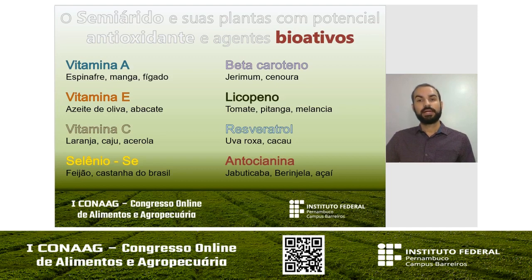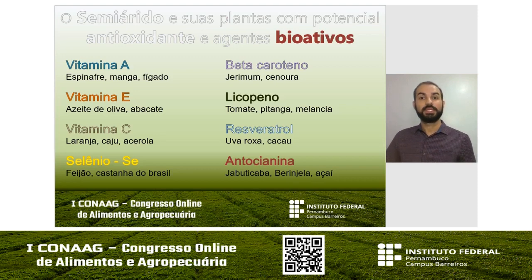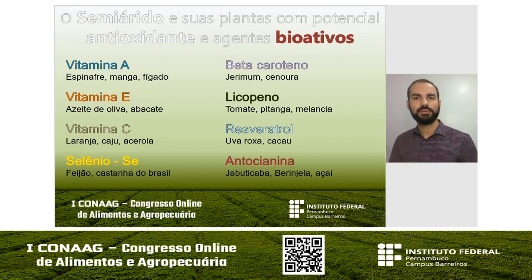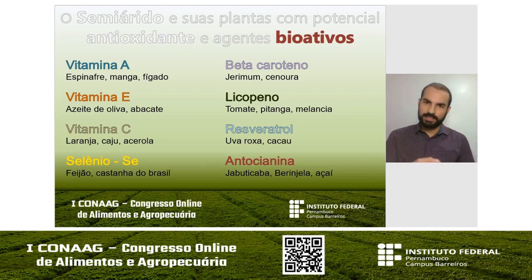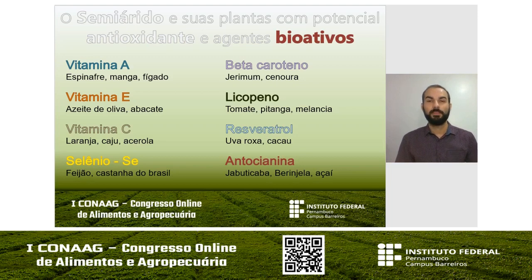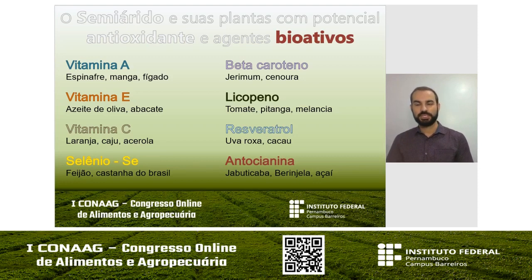Outro agente bioativo é o beta-caroteno, um pigmento responsável pela coloração alaranjada, típico de jirimum e cenoura. Ao consumir jirimum e cenoura, estamos consumindo beta-caroteno, que possui capacidade antioxidante. Outro pigmento de grande importância é o licopeno, presente no tomate, na pitanga e na melancia. O que têm em comum tomate, pitanga e melancia? A cor — a coloração avermelhada é dada pelo licopeno, que é um agente bioativo com capacidade antioxidante que ajuda o organismo a combater os radicais livres.